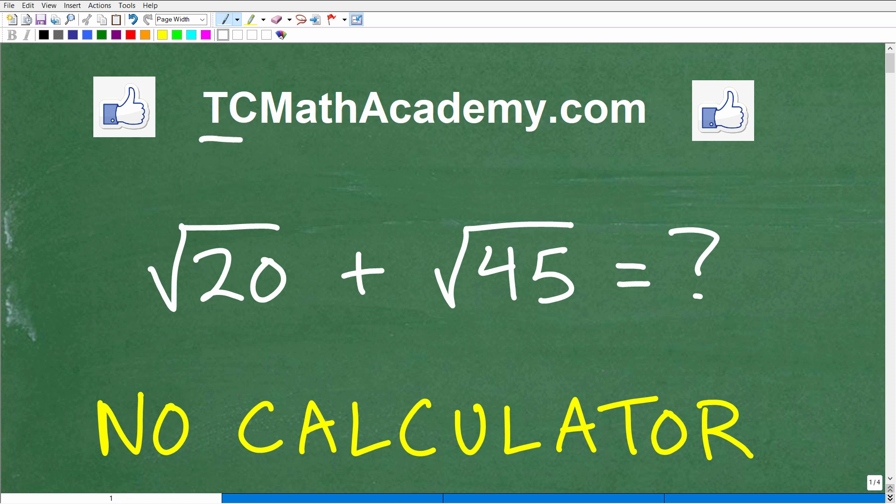Hello, this is John from TC Math Academy, and in this video, we're going to add these square roots without the aid of a calculator. Again, the problem is not to get your calculator out and get a decimal for the square root of 20, and then get another decimal for the square root of 45 and add those up.